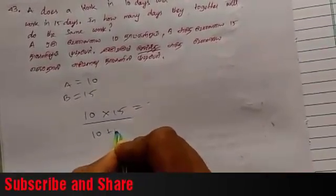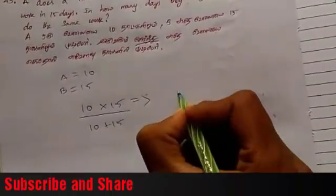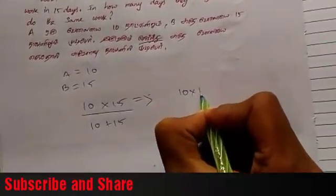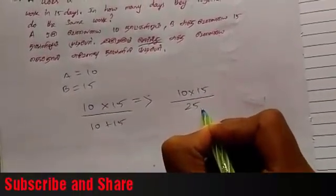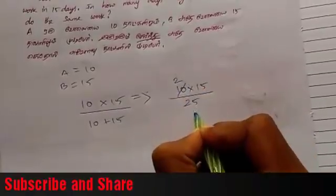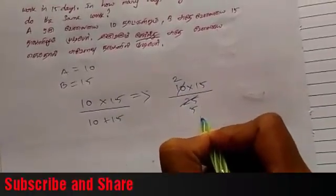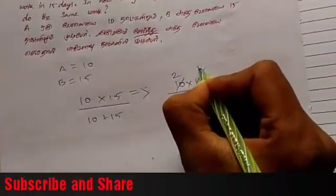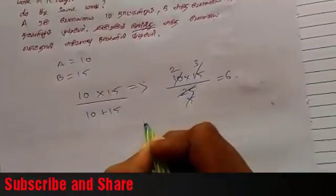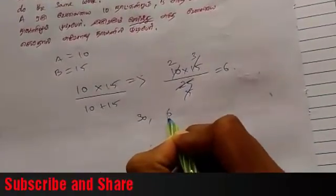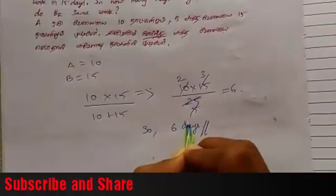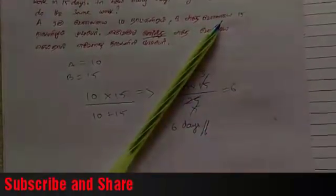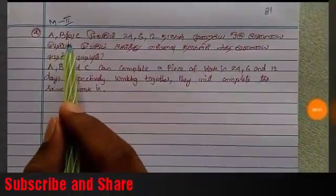10 plus 15, if you do this calculation, you will use the formula. So 15 into 10 divided by 10 plus 15. 2 times 5 is 10, 5 times 5 is 25. 1 times 5 is 5, 3 times 5 is 15, giving us 6. So 6 days is the answer. This is the basic model.